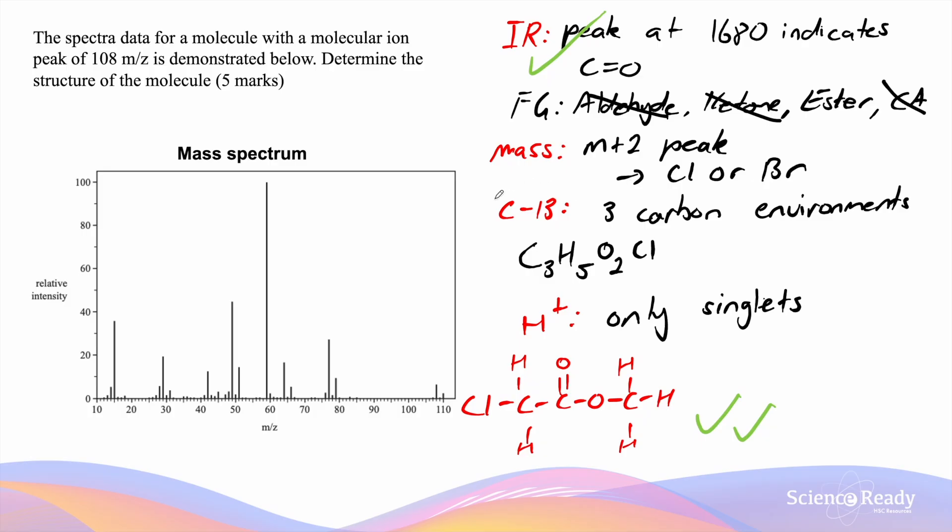The mass spectrum indicates to us a molar mass of 108 mass-to-charge ratios. That is also correct for our molecule which has the formula C3H5O2Cl and is also consistent with the carbon-13 NMR because there are three carbons which are all bonded to different things.